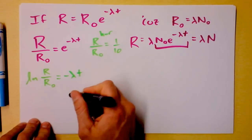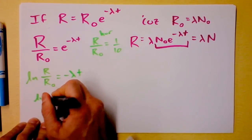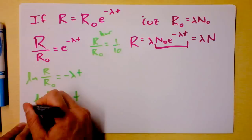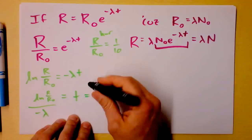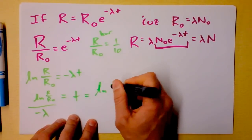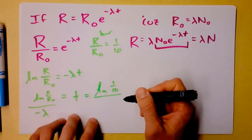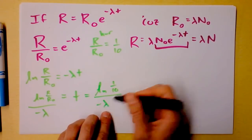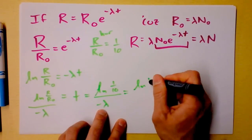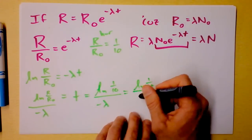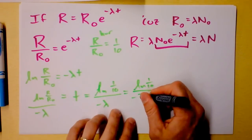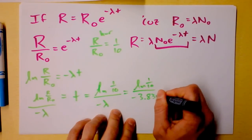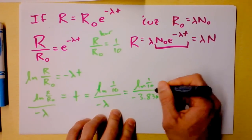t is the natural log of that ratio R over R naught then divided by negative lambda. I'm about to plug in all these numbers and it's going to be absolutely disgusting. But here we go. I'm going to plug in the natural log of one tenth. And then I'm going to divide that by lambda negative lambda. Oh, shoot. The natural log of one tenth divided by and now I need that decay rate again. I think here it is. Here's the decay rate. I'm going to get 3.83 times 10 to the negative twelfth one over seconds.